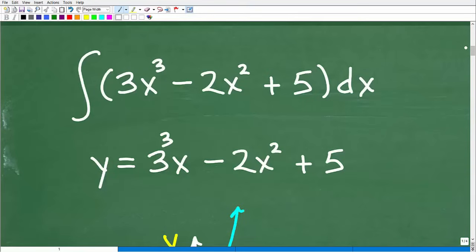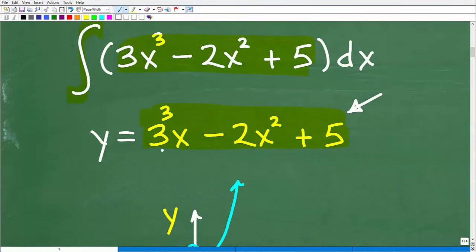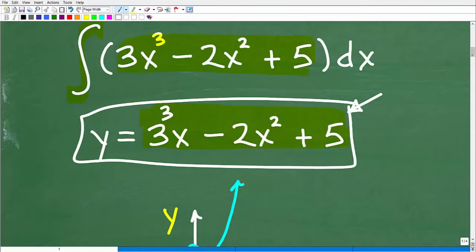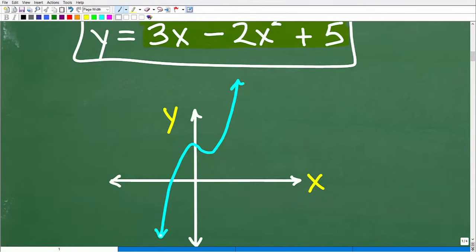Here is our problem. This is a very typical type of problem in calculus. A huge part of calculus is finding the area of all kinds of crazy objects that we don't have formulas for. This thing right here, this function, is actually a polynomial function: 3x³ - 2x² + 5. If you've had first or second year algebra, you should be able to graph this. This thing has an associated graph to it.